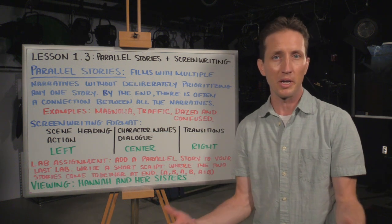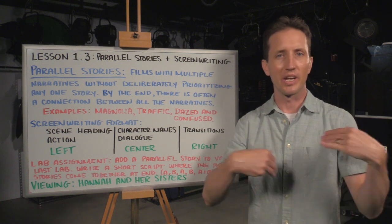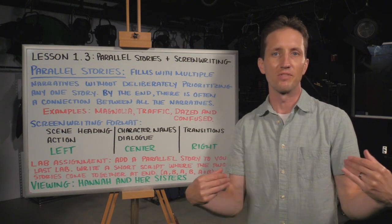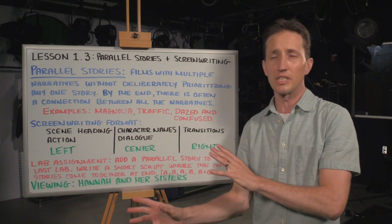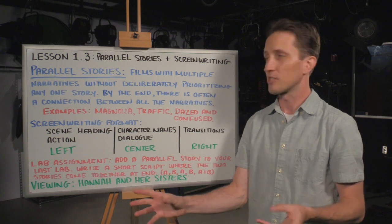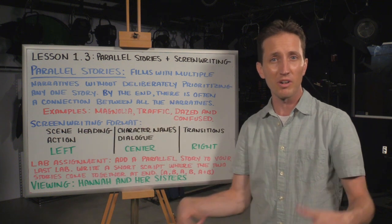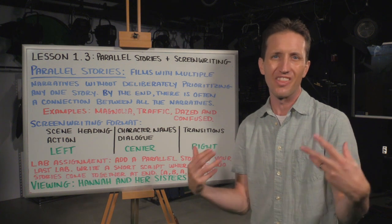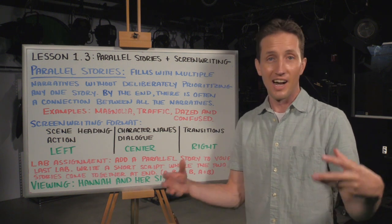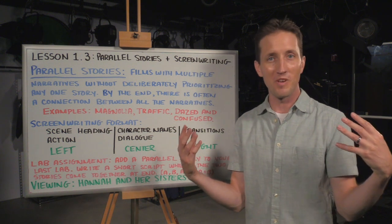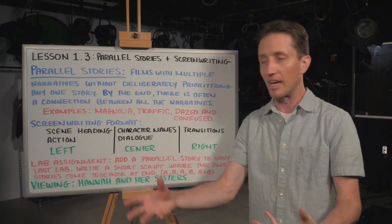So what is a parallel story? Up to this point, all of the lecture videos that we've watched have focused on a single protagonist going on some journey where they have to find something they're looking for, overcome obstacles, and ultimately change as a person. With Parallel Stories, we don't necessarily have that one single protagonist. We might have several main characters, and the film does not deliberately prioritize any one character. There is no main character — there might be five, or ten, or if this was David Simon's The Wire, hundreds. So it requires a lot of work on the part of the audience, because you have to remember all the different storylines of all these different characters.